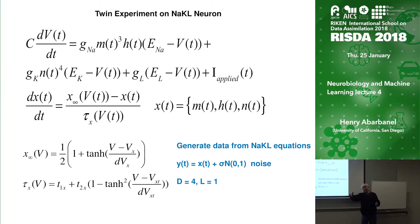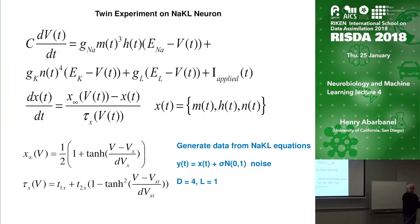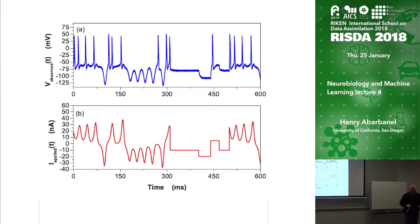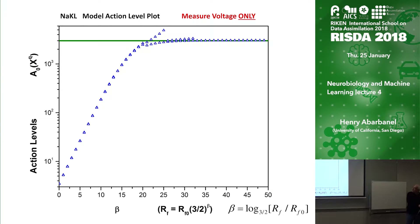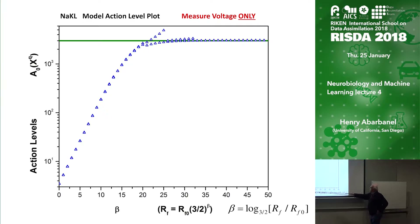Using this model discretized in time, here's an example: we put a made-up current into a made-up neuron and that's the voltage as a function of time. I'm not going to dwell on that, but this is what the calculation gives you down here — this is the logarithm of RF.